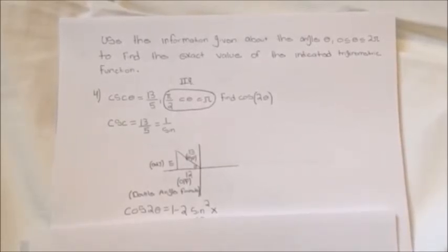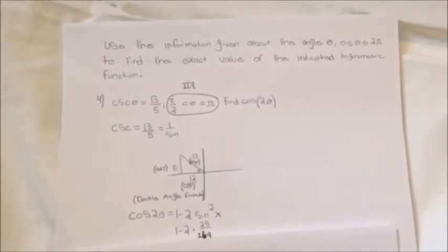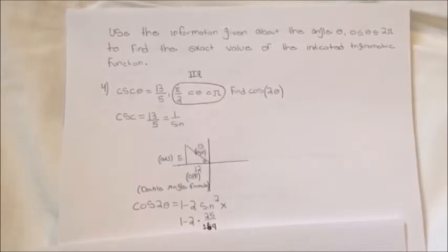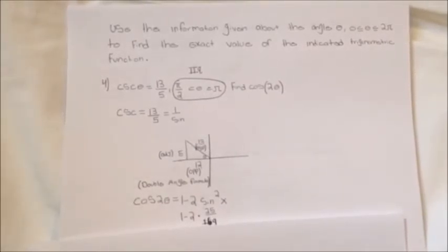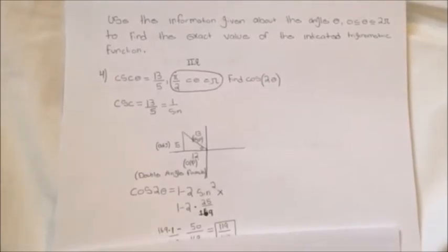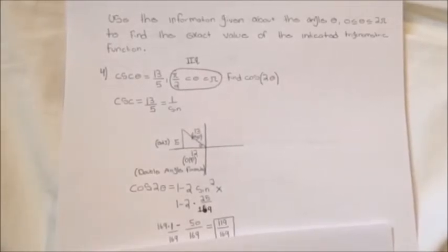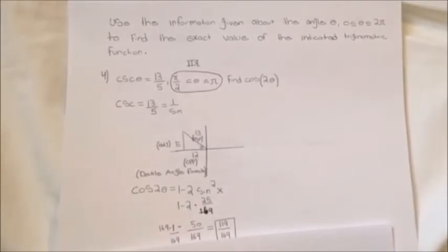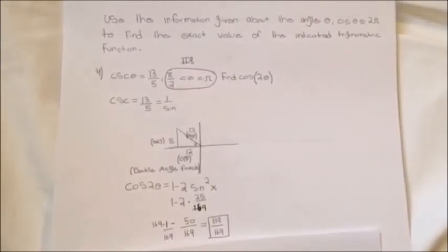To find cosine 2 theta we use the double angle formula: cosine 2 theta equals 1 minus 2 sine squared theta. We know sine theta equals 5 over 13. Squaring 5 gives 25 and squaring 13 gives 169, so we have 1 minus 2 times 25 over 169. Since 2 times 25 equals 50, we get 1 minus 50 over 169. Keeping the same denominator, 169 minus 50 equals 119, giving a final answer of 119 over 169.